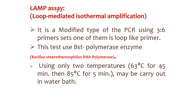LAMP assay, or loop-mediated isothermal amplification, is a modified type of PCR using 3 to 6 primer sets, one of which is a loop-like primer. This test uses BST polymerase — Bacillus stearothermophilus DNA polymerase. It uses two temperatures: 63 degrees centigrade for 45 minutes and 85 degrees centigrade for 5 minutes, and may be carried out in a water bath.